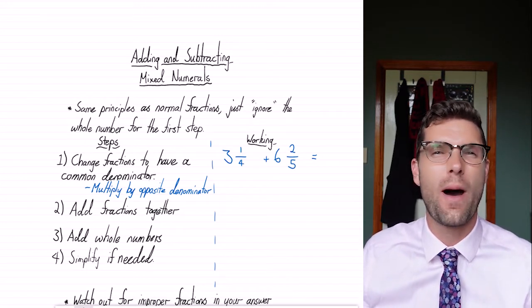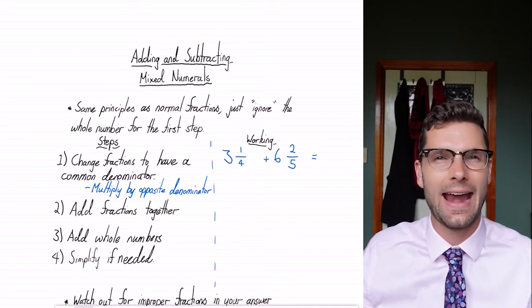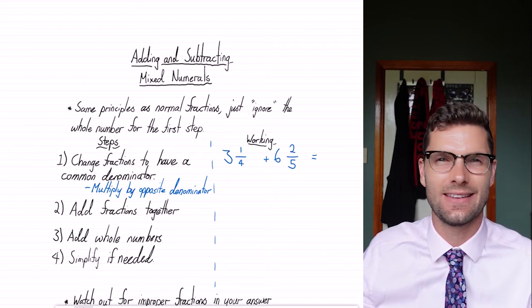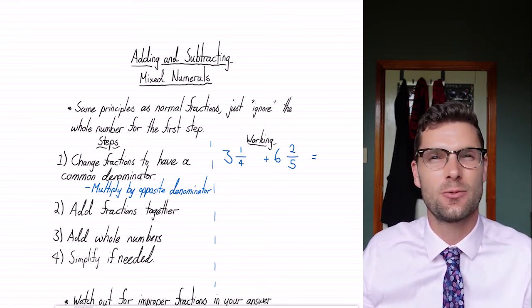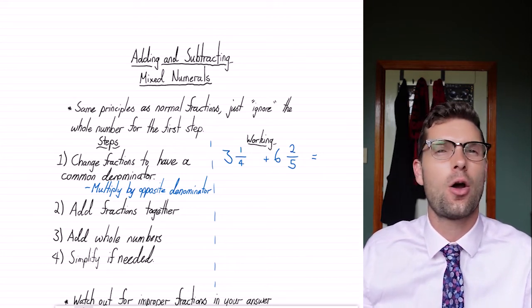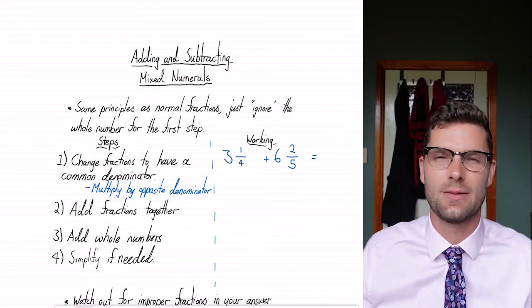So these questions often look much more difficult than they actually are. If you're good at adding and subtracting unlike fractions, 100% you're gonna get this quite easily. So what I want you to do is go through the exact same steps that we go through for our unlike fractions, but we're just gonna ignore that whole number out the front until it comes into play at the end.